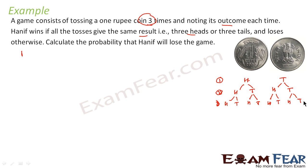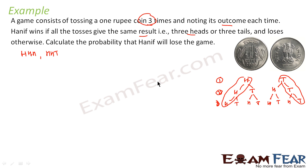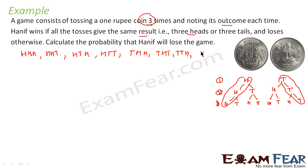Listing all possible outcomes from the tree: HHH, HHT, HTH, HTT, THH, THT, TTH, TTT. He wins only if he gets three consecutive heads (HHH) or three consecutive tails (TTT).